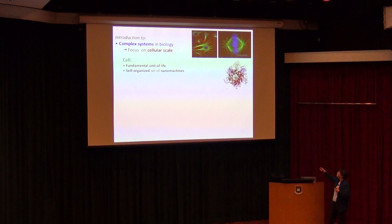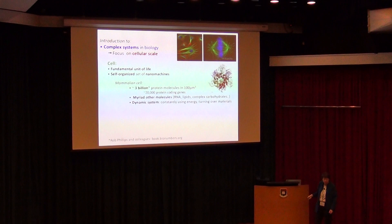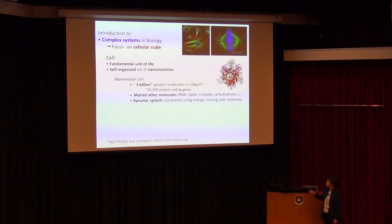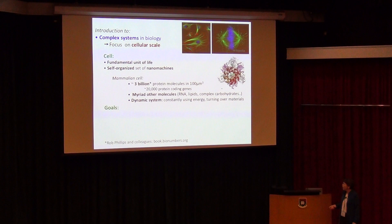All together these nanomachines assemble into a whole cell — you can see some substructures; this is the structure pulling the chromosomes apart. A mammalian cell has about three billion different proteins in about a hundred cubic microns. A really excellent source for numbers in biology is something that physicist Rob Schiller put together online. Those three billion proteins come from about 20,000 protein-coding genes, but you've also got a myriad of molecules — RNAs, lipids, complex carbohydrates — all going together to make this dynamic system that is the cell.